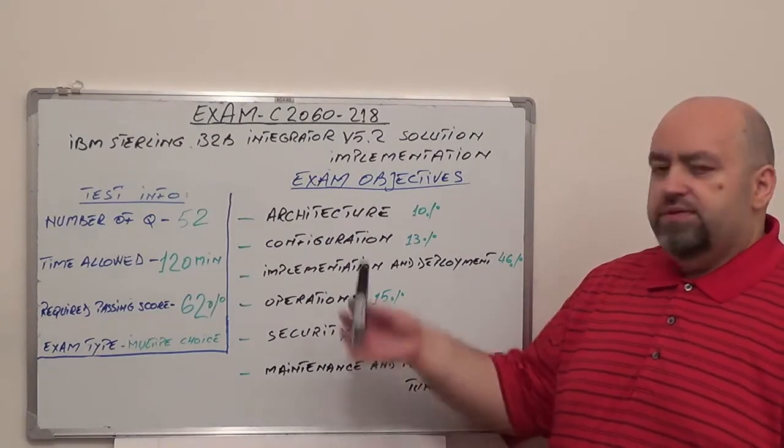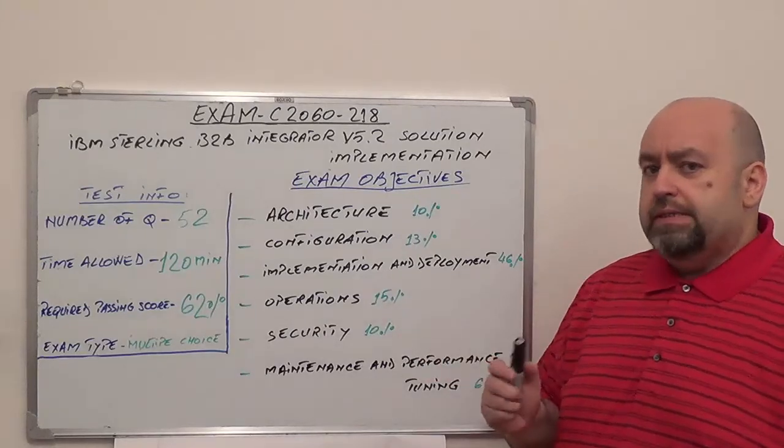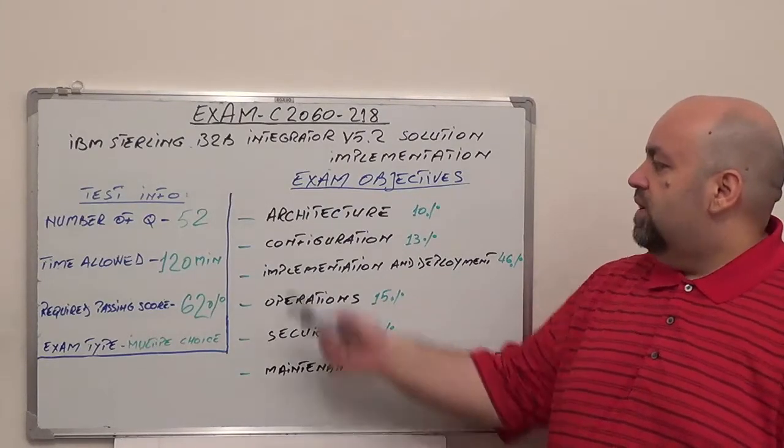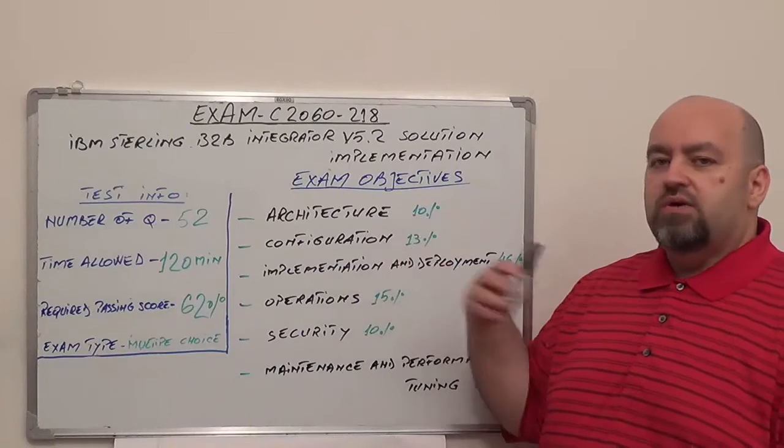On this exam we have six sections, representing each section one by one. So let's start with the first one. First one, Architecture, 10% from total questions.